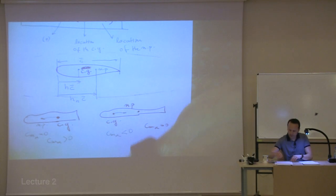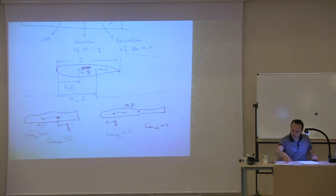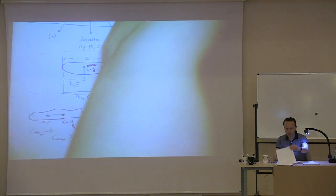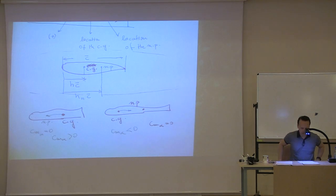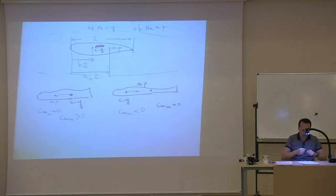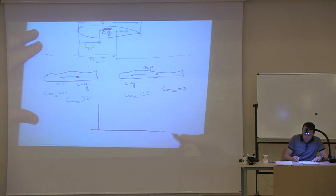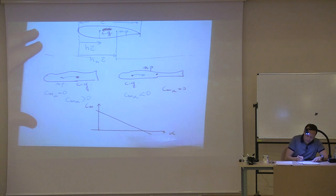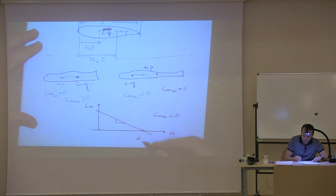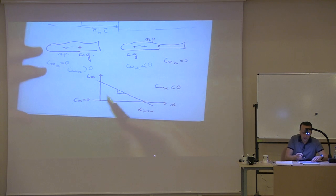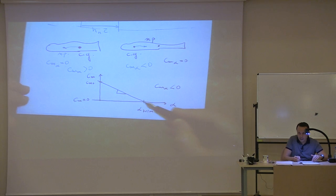The CG has to be in front of the aircraft. If you plot CM versus alpha, the graph has to look like this: the slope CM_alpha would be less than zero, you would have an alpha trim where CM equals zero, and you need CM_zero to be positive. So CM equals zero at alpha equals trim.